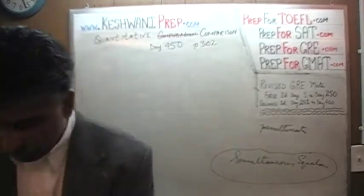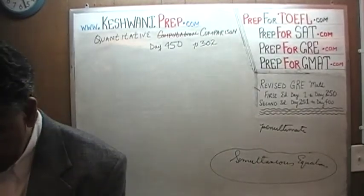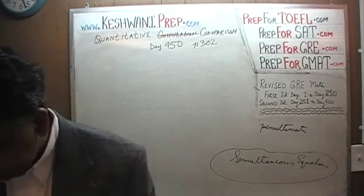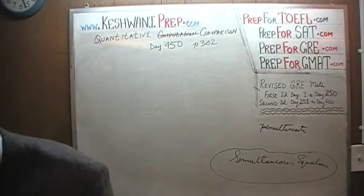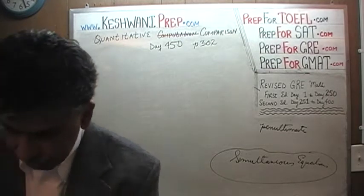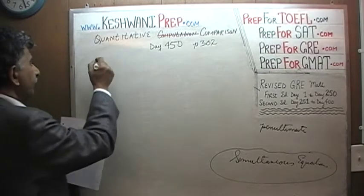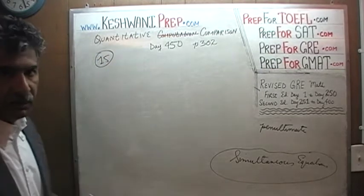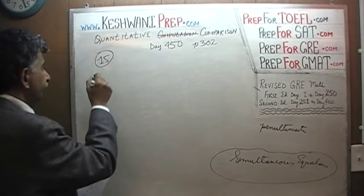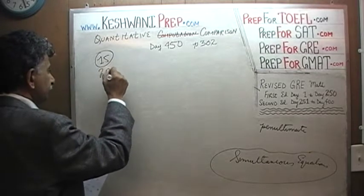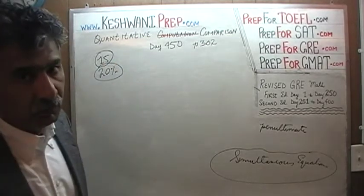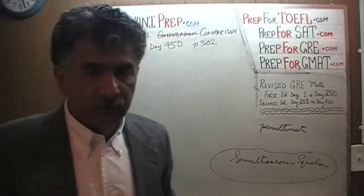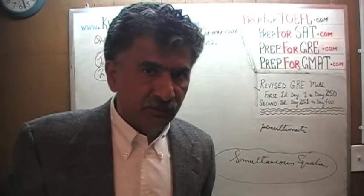Let's turn to page 302, problem number 15 — the very last problem on the page. When this problem appeared on the exam, only one-fifth of the people who took the exam got it right. Four-fifths — 80% of the people — missed it.